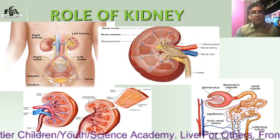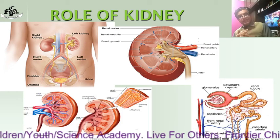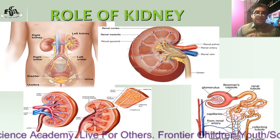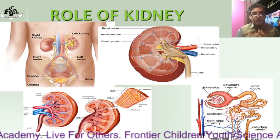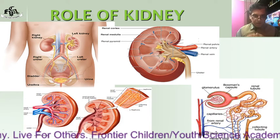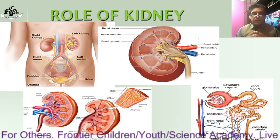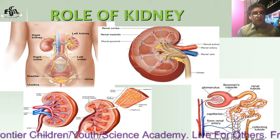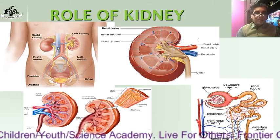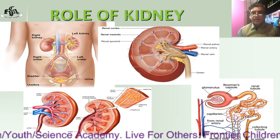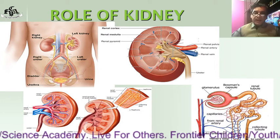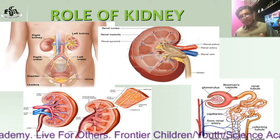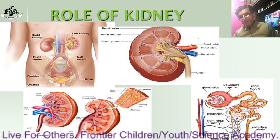Now the function of the kidney: it filters the blood to extract waste material and excess material from the blood. As shown in the diagram, the renal artery enters each kidney — the red color indicates the renal artery — and the blood enters inside the kidney where it is filtered by the nephrons.